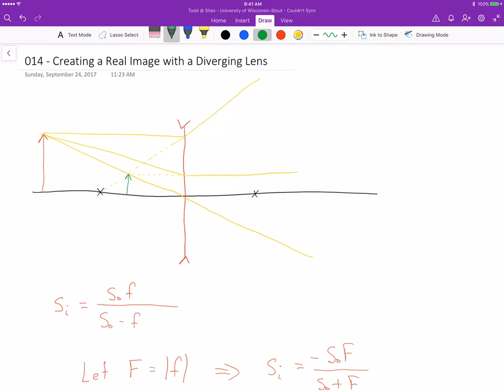It turns out that if you just have a diverging lens and nothing else, you cannot form a real image. So let's see how we can go about creating a real image, what we need to do.